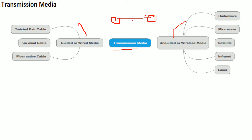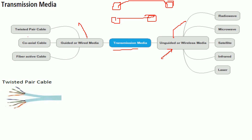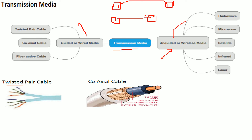Transmission media can be guided or unguided. Guided media uses physical wires between nodes. In guided or wired media, we have twisted pair cables — where wires are twisted together — and coaxial cables, which share the same axis. A coaxial cable consists of a copper wire, insulation, a copper mesh, and an outer insulation layer.